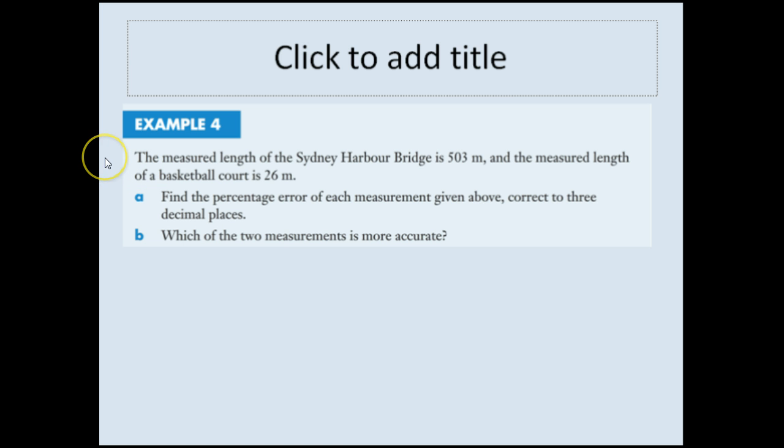So the measured length of Sydney Harbour Bridge is 503 meters, and the nearest length of a basketball court is 26 meters. Again, if I measured this one wrong by half a meter, that's not a big error because I'm looking at 500 meters. But here on a basketball court, half a meter is quite significant because it's a lot smaller. So what we need to do here is find the percentage error of each measurement above, correct to three decimal places. And from there we can see which measurement would be more accurate.